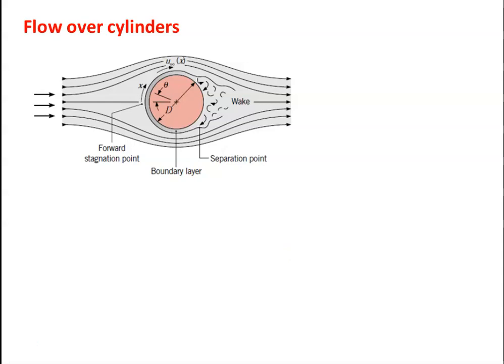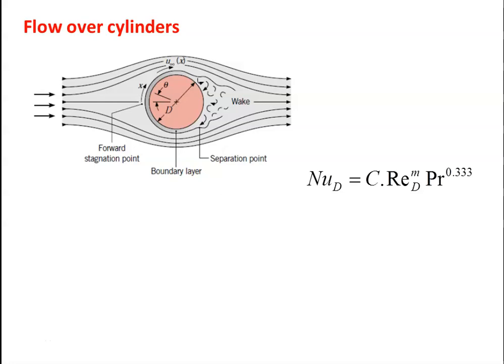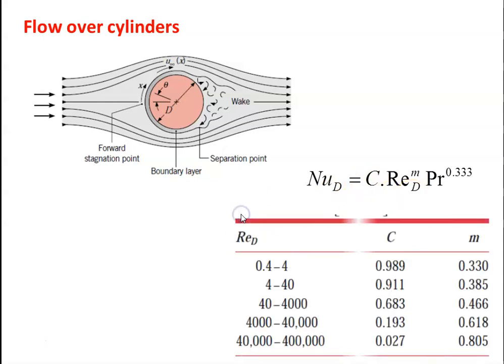For flow over a cylinder of diameter D, the fluid flows with velocity U∞, producing streamlined flow over the surface and wake flow at the back. The Nusselt number is given by: Nu = C × Re^M × Pr^0.333, where C and M are constants taken from a table in the data book. Here, Nu = hD/k and Re = UD/ν, so Nusselt and Reynolds numbers are calculated based on diameter.